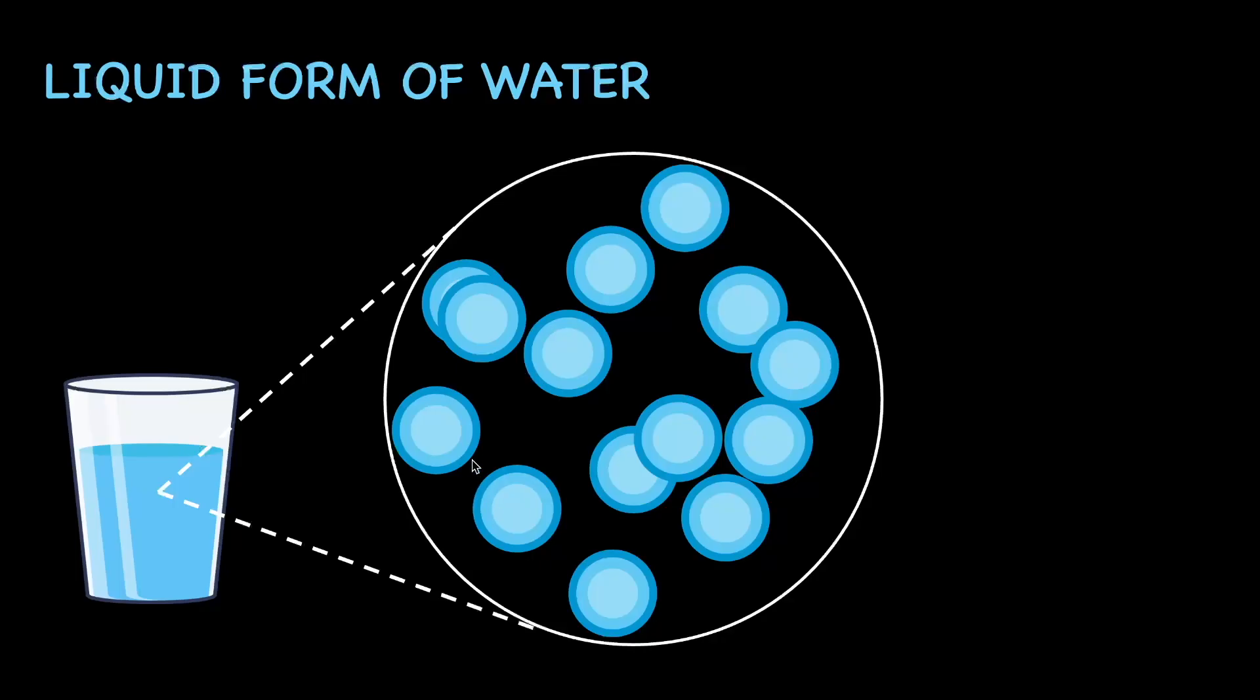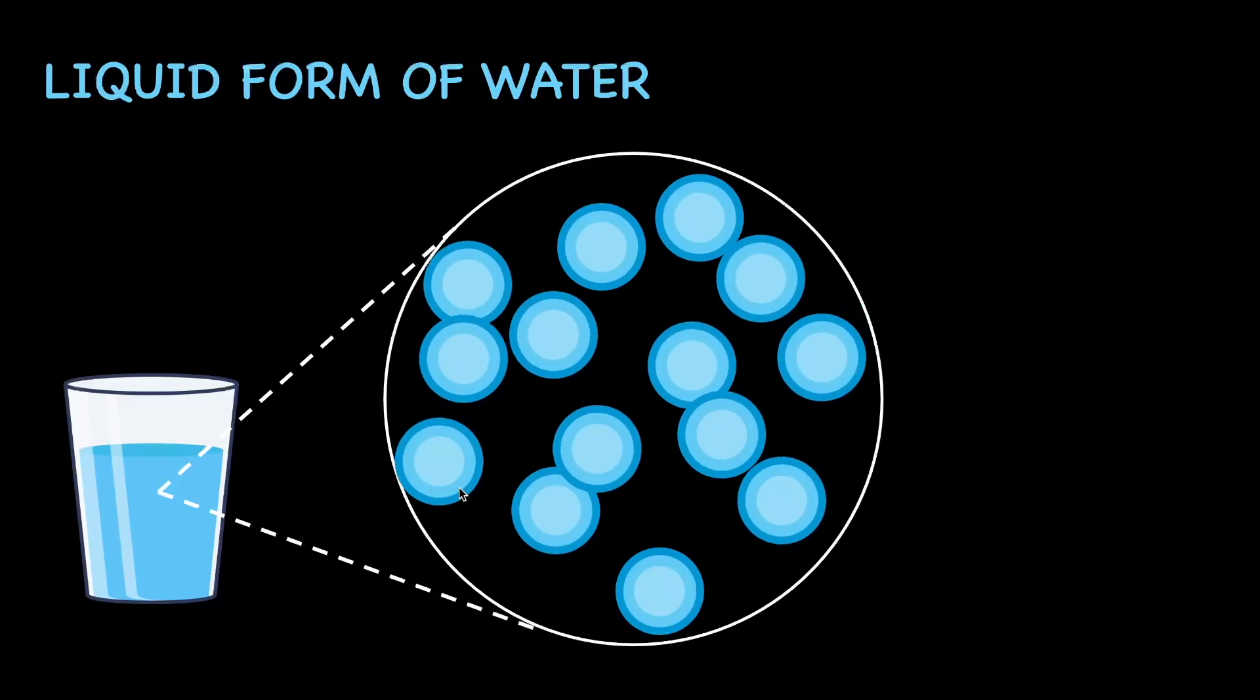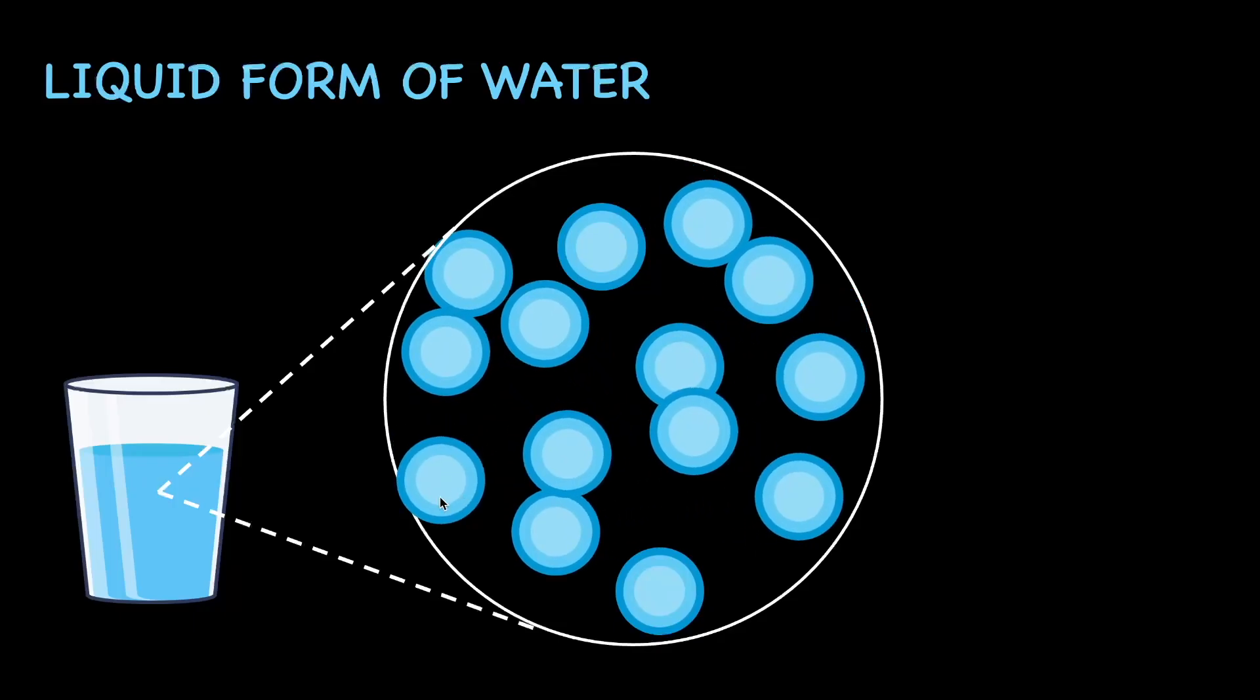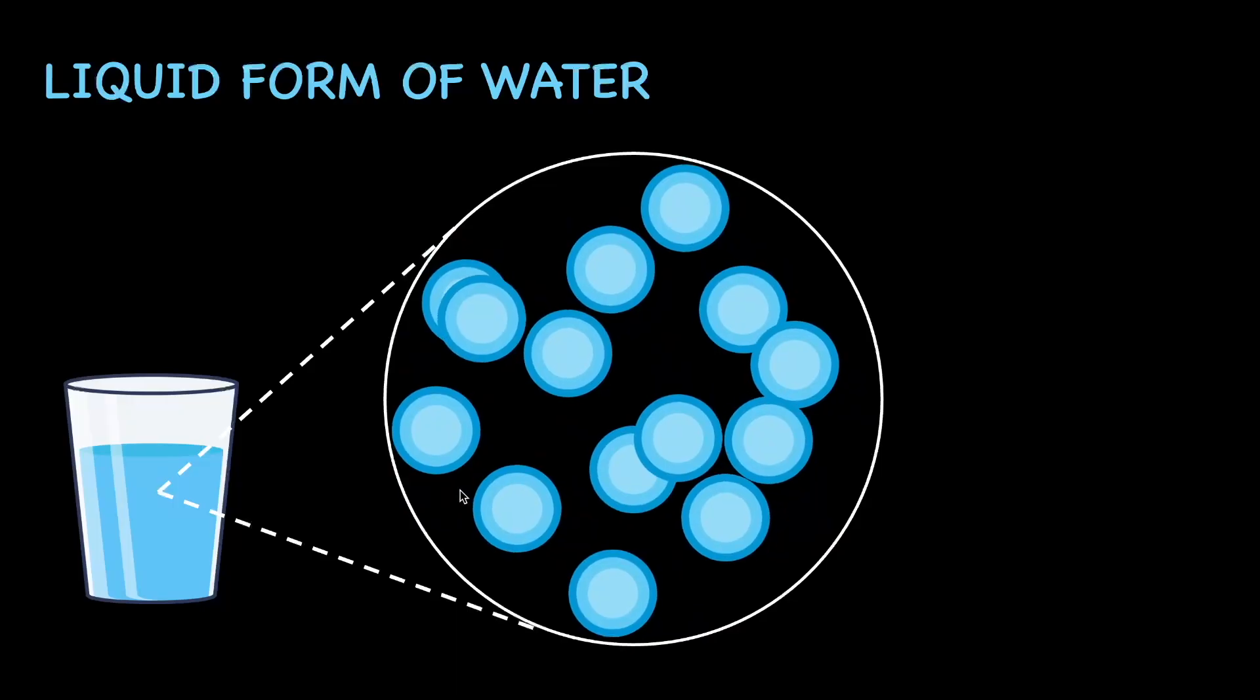Now, what I want you to focus on is how these particles are arranged. So, let's say if each circle here represents a particle of water, then notice how all of these particles are arranged. Are they very tightly packed? No, right? But rather, they are slightly loosely packed. And as a matter of fact, at room temperature, these particles also have the ability to move around a little bit. So, effectively, we see here that the particles are loosely arranged and there is space that exists between these particles.